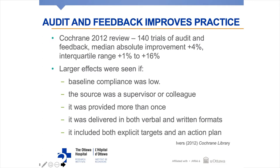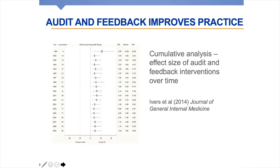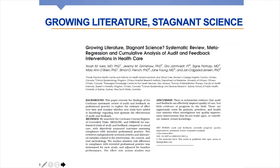One thing we observed through a cumulative analysis was that over about 15 years, our knowledge about how to use audit and feedback to improve care hadn't really changed — as we added new trials, we still found about the same median and interquartile range. This concerned us because, to quote Noah again, we had a growing literature of stagnant science. Since the Cochrane review, we've been thinking with a group of international colleagues about how to understand why we have this variation in response and how we can predictively increase the likelihood that audit and feedback will be effective.